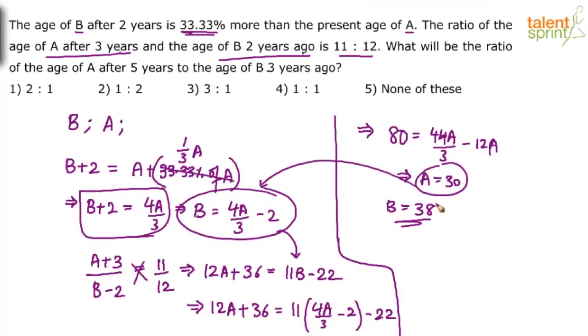Solve for the required ratio. Age of A after 5 years. He is asking us to find out A plus 5. Age of B, 3 years ago. B minus 3. So 30 plus 5 and B minus 3 is 38 minus 3. How much will this be? 35 and 35. 1 is to 1. Option 4 will be the answer.